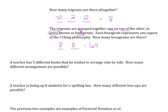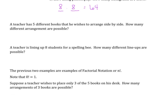What if a teacher has five different books that he wishes to arrange side by side? How many different arrangements are possible? He has five books. We'd have five options in the first spot. We've used one, so we only have four in the second. We've used two, so we have three in the third, two in the second to last, and then one left over. Using the Multiplication Principle and multiplying all these together, we have 120 different ways that we can arrange them.